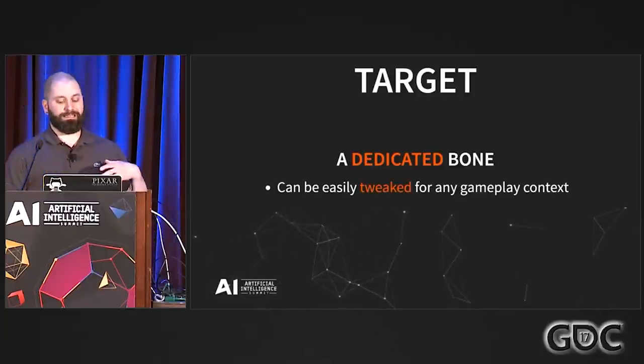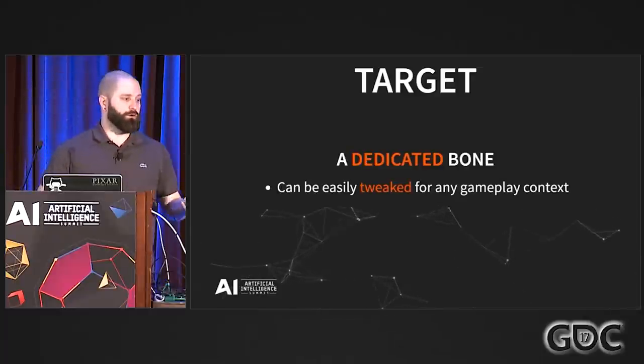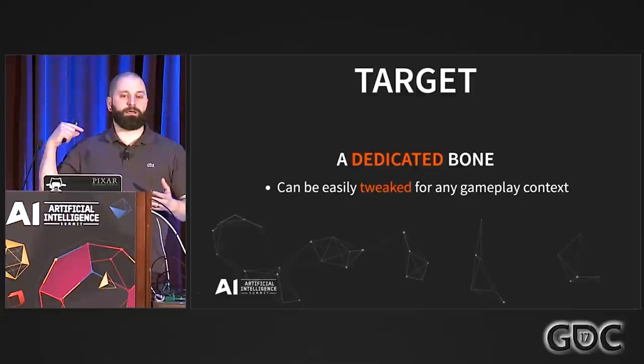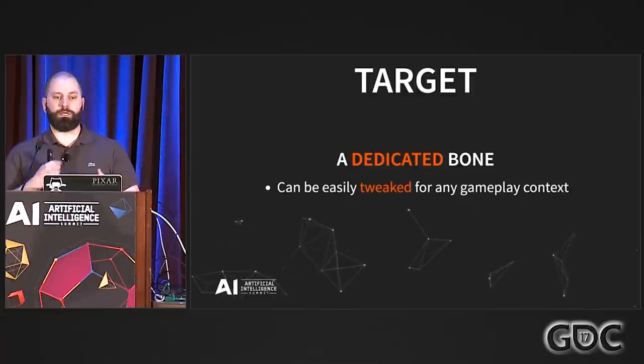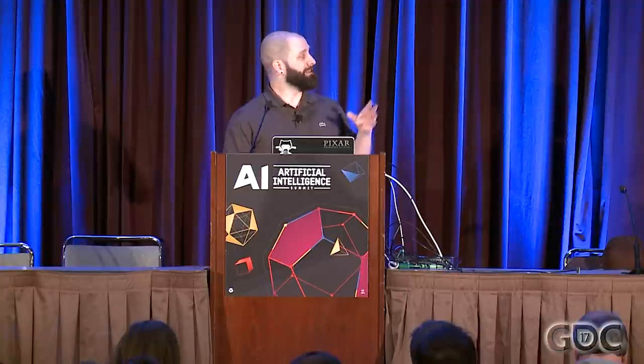I still prefer a dedicated bone, similar to the sensor attachment on an NPC. With a dedicated bone, you can easily tweak for any gameplay context. For example, if the player goes into cover, maybe you want to move the bone toward the wall so that NPCs in front have a harder time detecting because the bone is closer to the wall. Unfortunately, this makes things harder for QA, so work on your debug tools and make sure it's easy to see where the bone is located. The more data you have, the more chances someone will create a bug — with that kind of flexibility, sometimes you have to take more precautions.